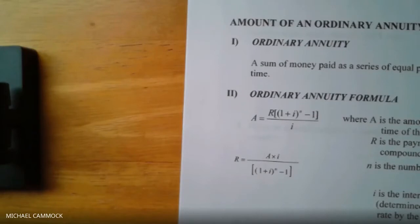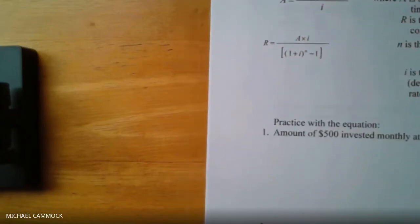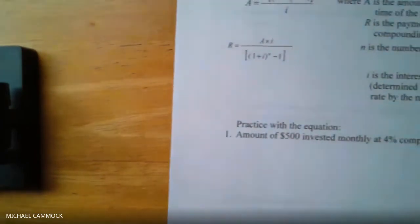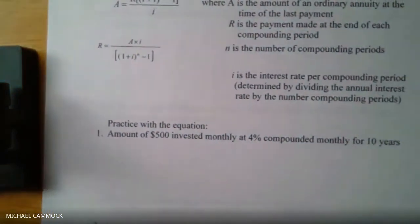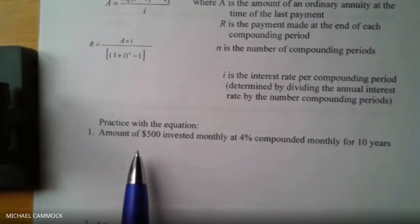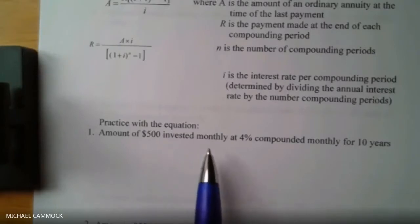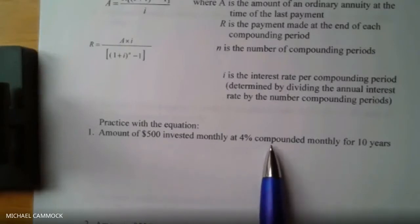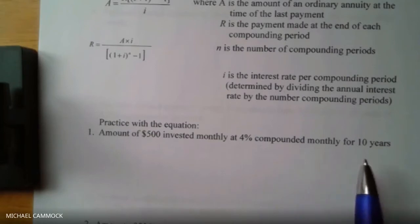Grab a calculator and we're going to work through some annuity calculations right now. Here's the first question: I want to know the amount if I put $500 into an account monthly, getting 4% compounded monthly, for 10 years.